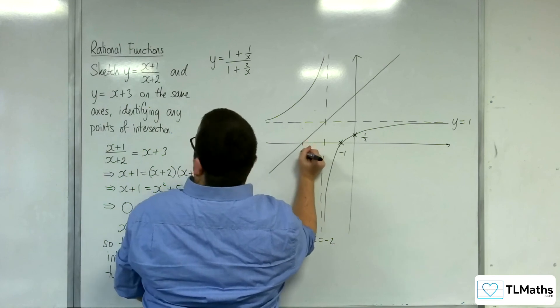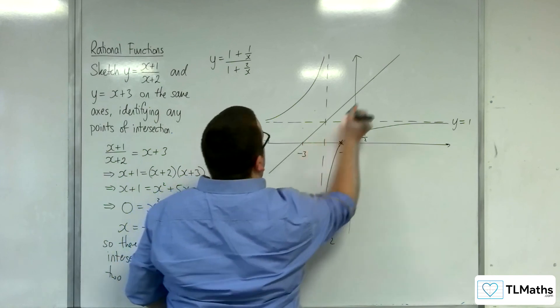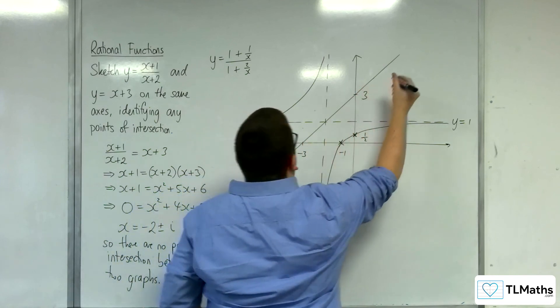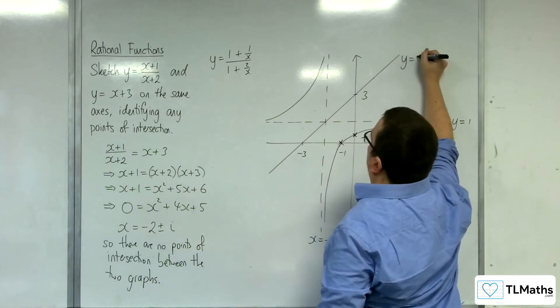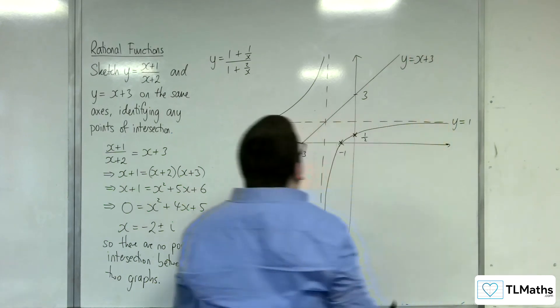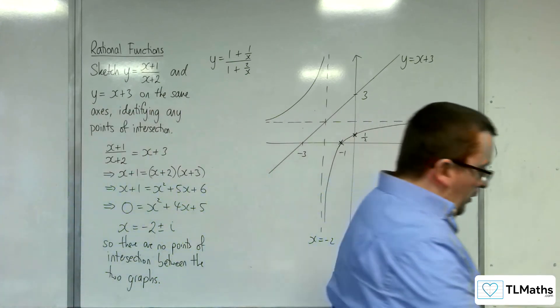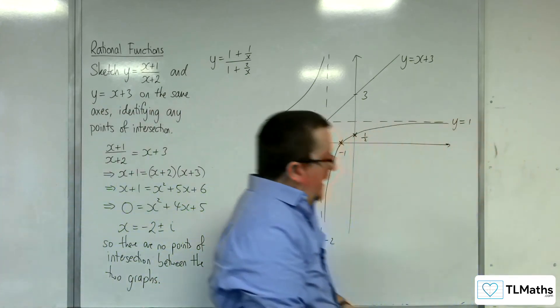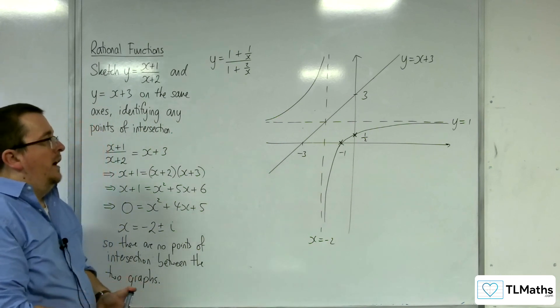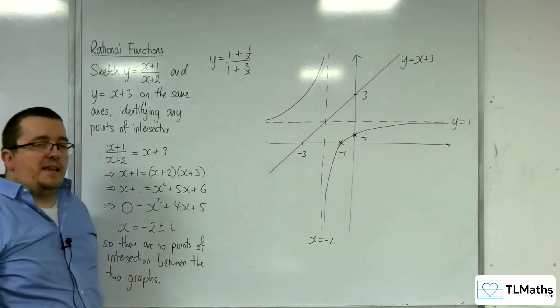So that point is going to be minus 3. That point is going to be 3. That's your y equals x plus 3. OK, and so this is what the curve and the line will look like side by side on the same axes, and I'm afraid they don't intersect.